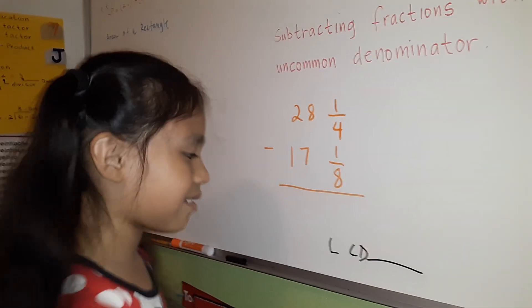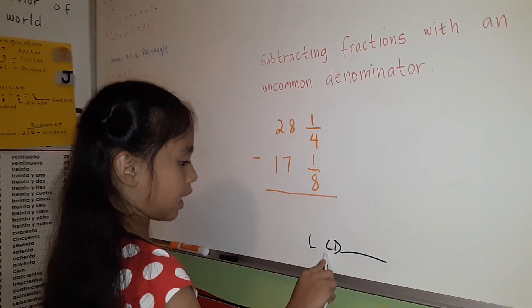Do you know what LCD means? L is for least, C is for common, D is for denominator.